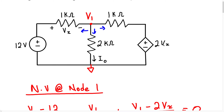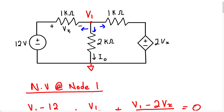Now for Vx, we know Vx is going to be the voltage across this 1K resistor. You could assume an inner current to flow through that resistor and say Vx equals 1000 times that current, but that's just going to add another unknown variable — we want to avoid that if we can. For the voltage Vx across that 1K resistor, look at what's happening.